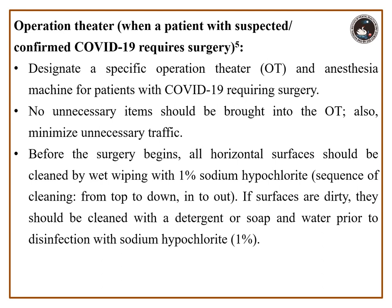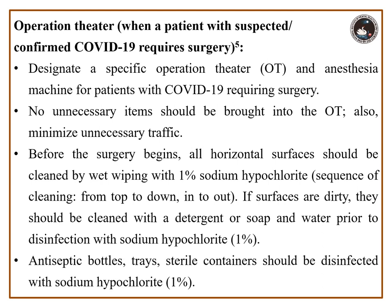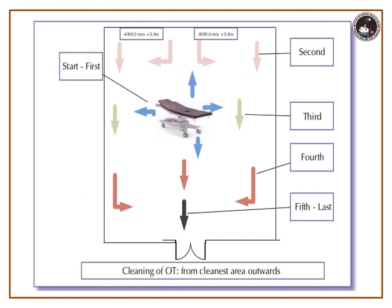Before surgery begins, all horizontal surfaces should be cleaned by wet wiping with 1% sodium hypochlorite. If surfaces are dirty, they should first be cleaned with detergent or soap and water prior to disinfection with sodium hypochlorite. Antiseptic bottles and sterile containers should also be disinfected with sodium hypochlorite. Here is an image illustrating the cleaning of the OT from the cleanest area outward.